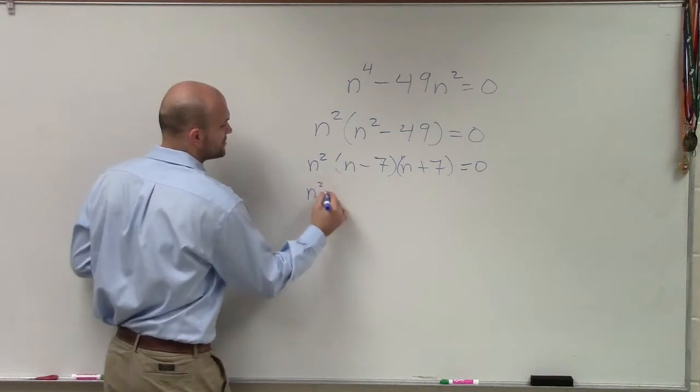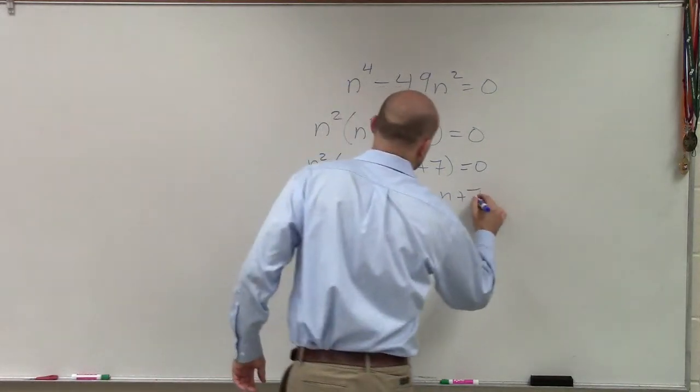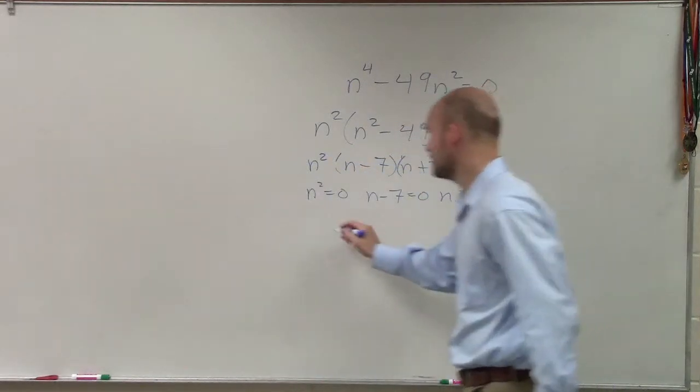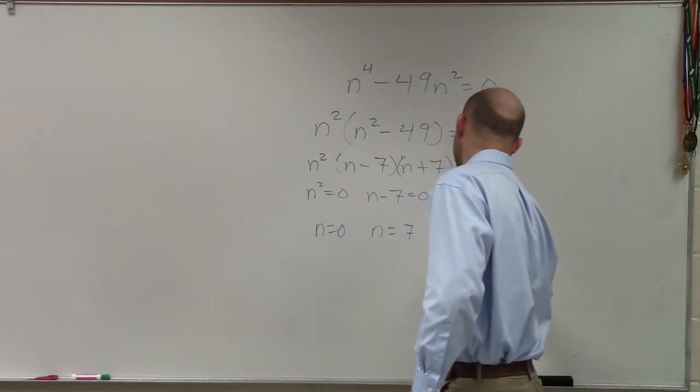All right, so therefore, we have n squared equals zero, n minus seven equals zero, and n plus seven equals zero. So therefore, n equals zero, n equals seven, and n equals negative seven.